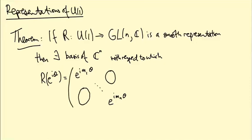In other words, it's a diagonal matrix, and on the diagonal we have e^{im θ} where the m's, m₁ up to mₙ, are integers. These are called the weights of the representation.